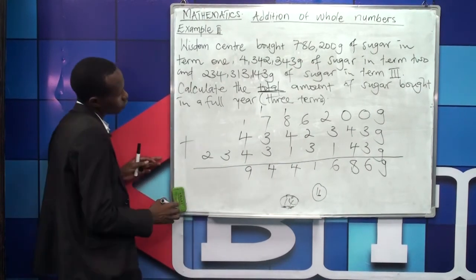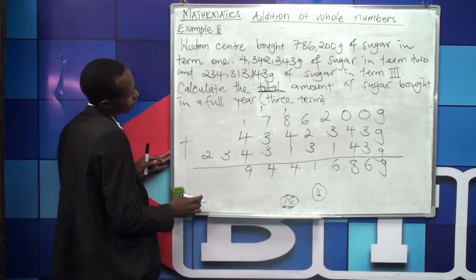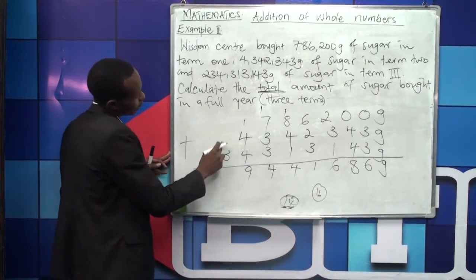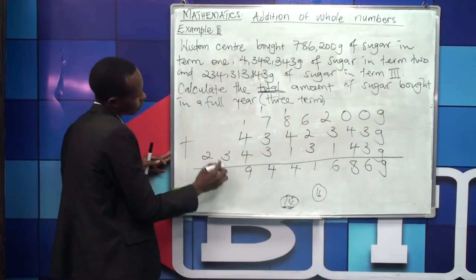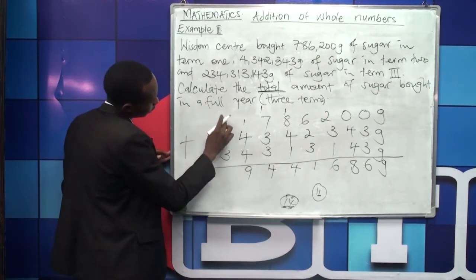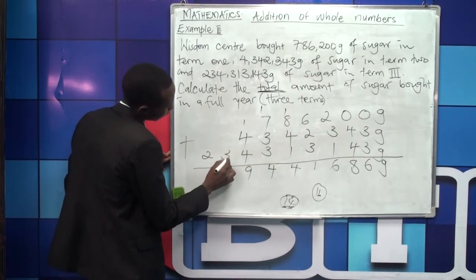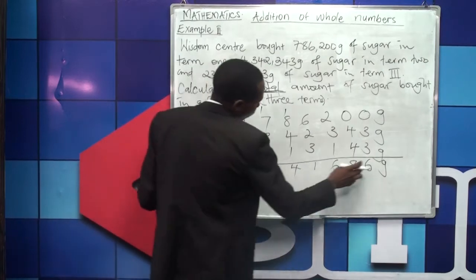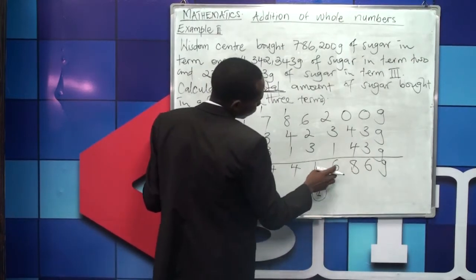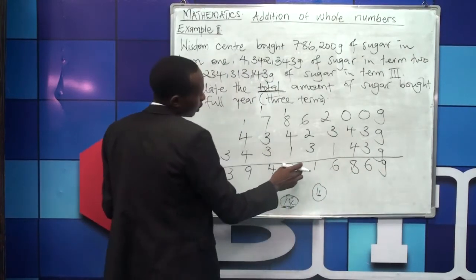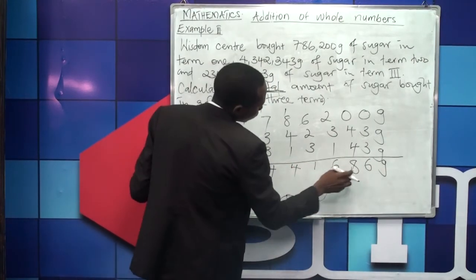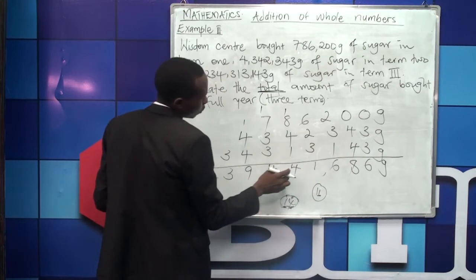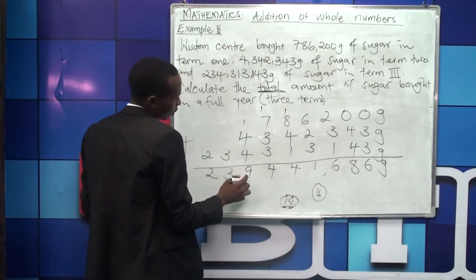In the next column, there is nothing from the first and second numbers, so we continue with what remains. Counting our digits: three groups of three separated by commas, giving us our final answer.